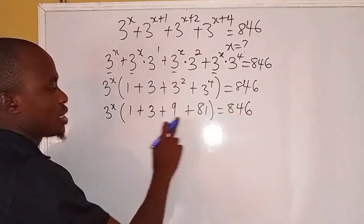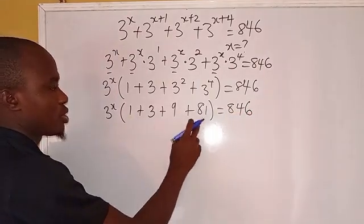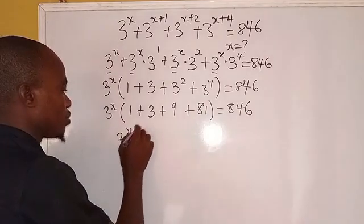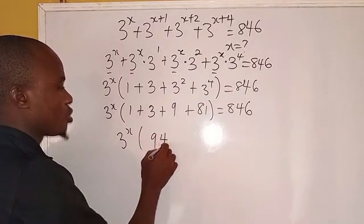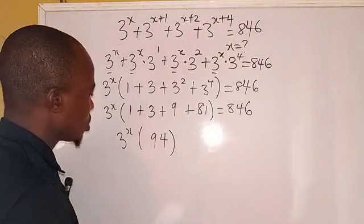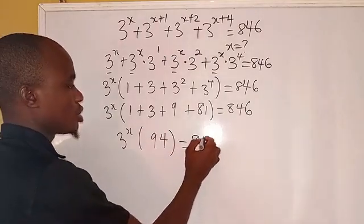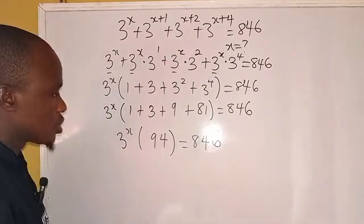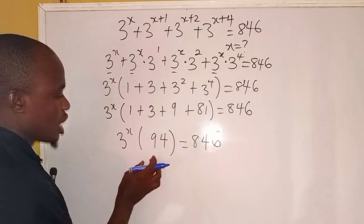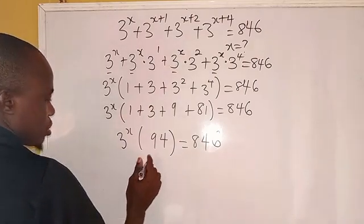So now if you try to add this: 1 plus 3 plus 9 plus 81, that will give us 94. Everything here is 94, so equals 846. Are you following?